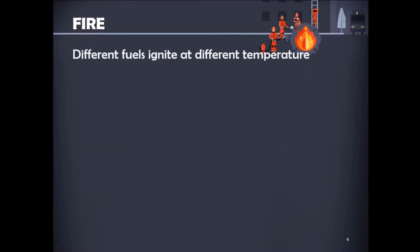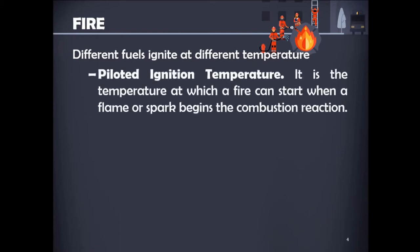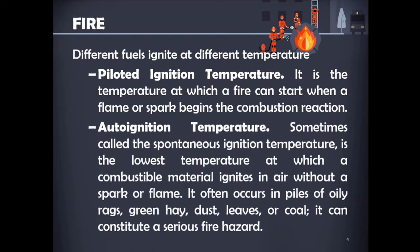Different fuels ignite at different temperatures. First is piloted ignition temperature — the temperature at which a fire can start when a flame or spark begins the combustion reaction. The fuel is hot enough that it releases sufficient flammable gases for combustion to occur, but a catalyst is needed to begin ignition. Second is auto-ignition temperature, sometimes called spontaneous ignition temperature — the lowest temperature at which a combustible material ignites in air without a spark or flame. It often occurs in piles of oily rags, green hay, dust, leaves, or coal, and can constitute a serious fire hazard.